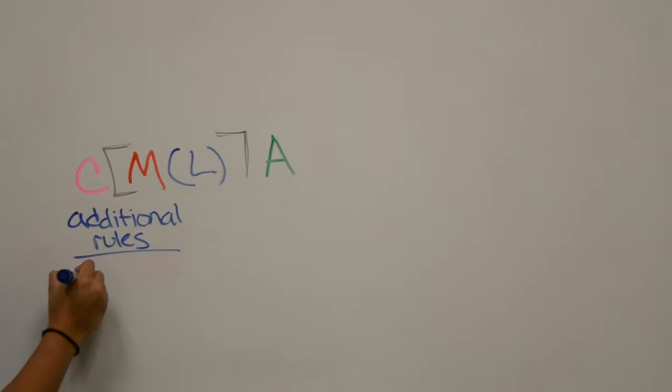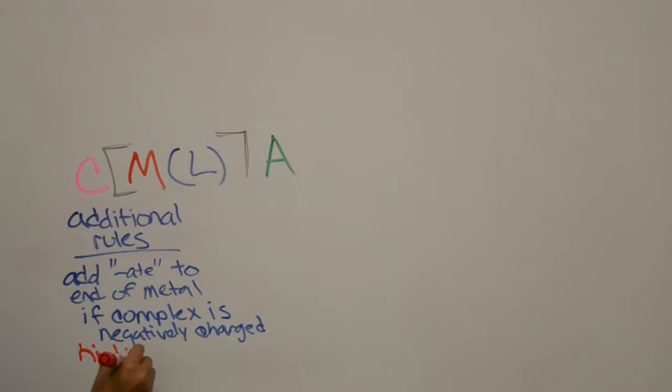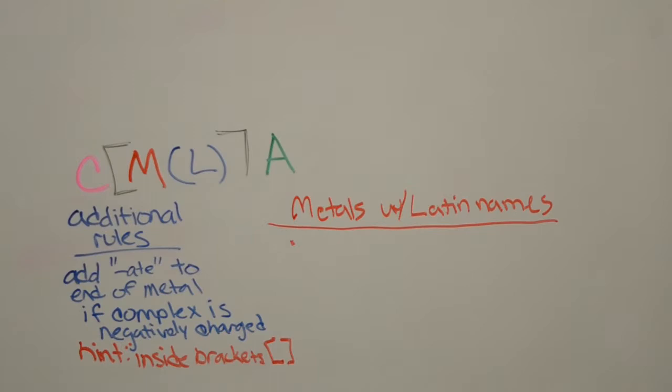Additional rules. You add -ate to the end of the metal if the complex is negatively charged. Hence it only pertains to what's inside the brackets. We have metals with Latin names also. If the complex is negatively charged, write Latin names with ending -ate.